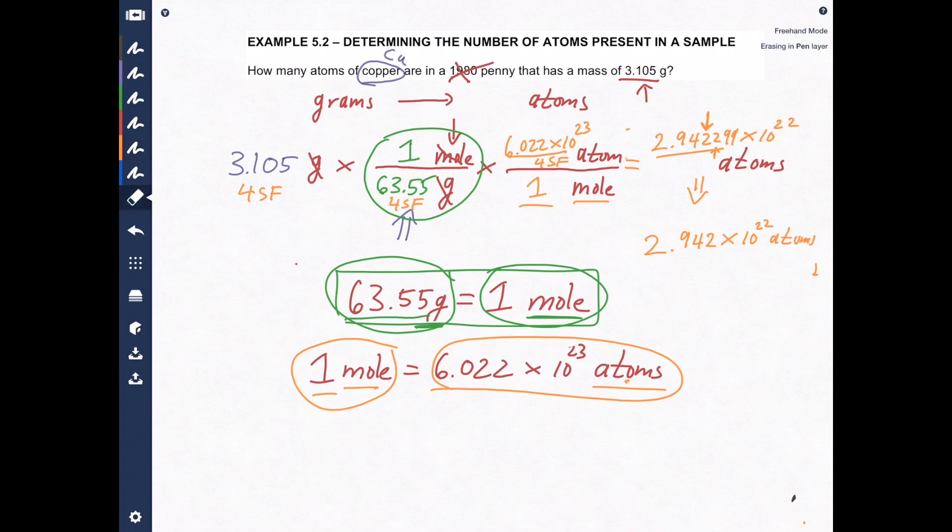Now we paid the dragon his toll. He shouldn't be bothering us anymore because we paid all the money he needs. And we got the final answer: 2.942 times 10 to the 22 atoms. And if you want to, you can just put copper right there to remind yourself this is for copper.